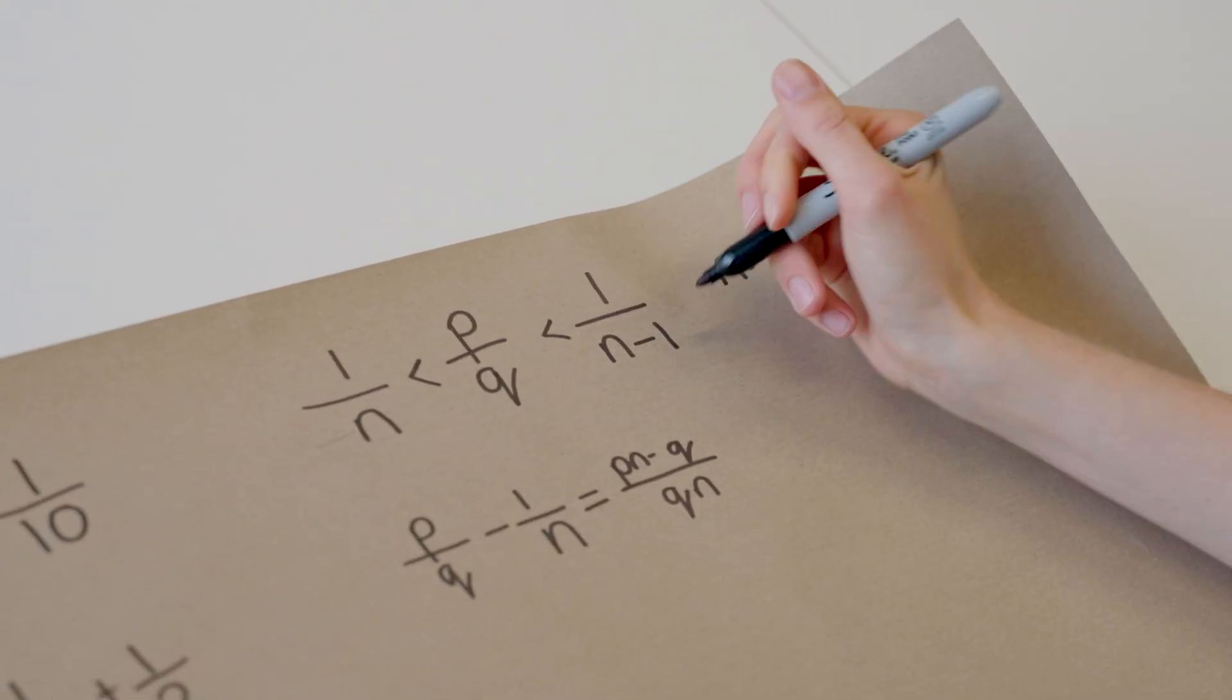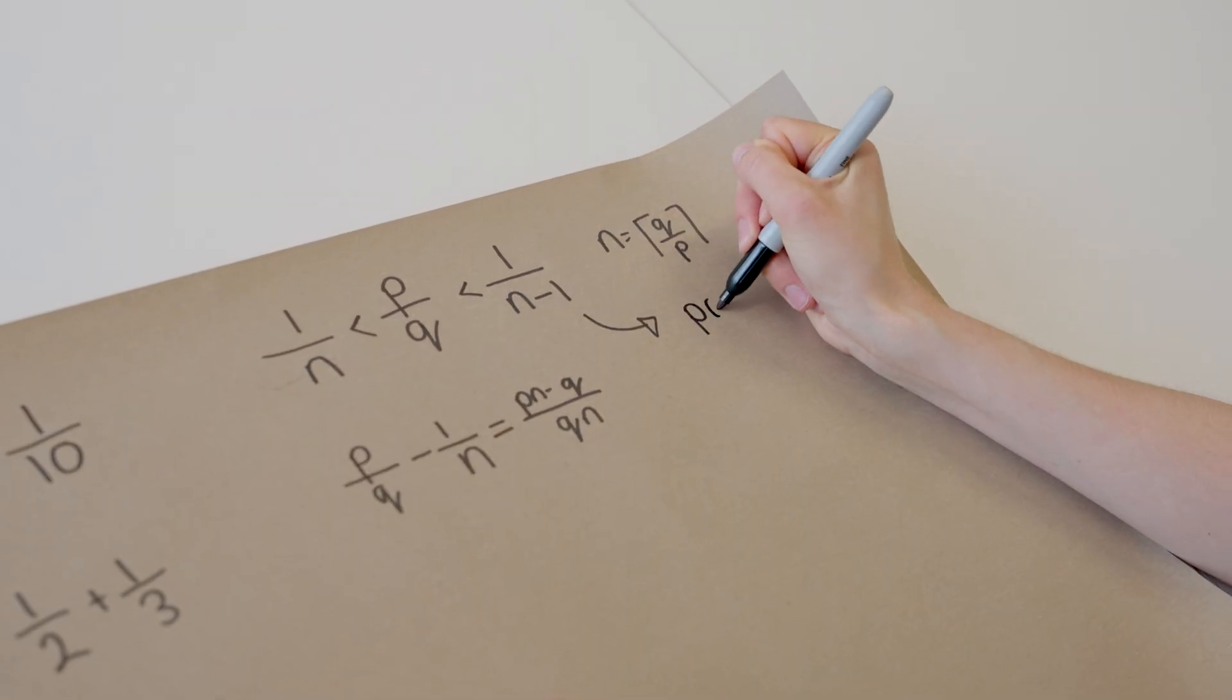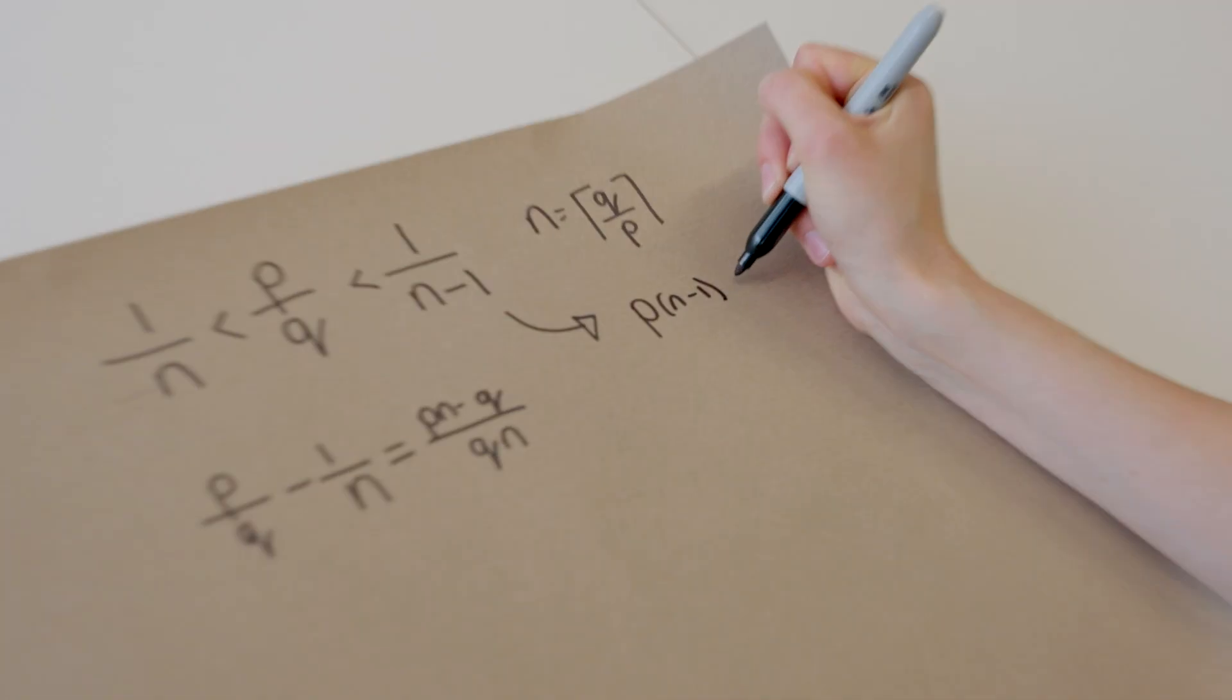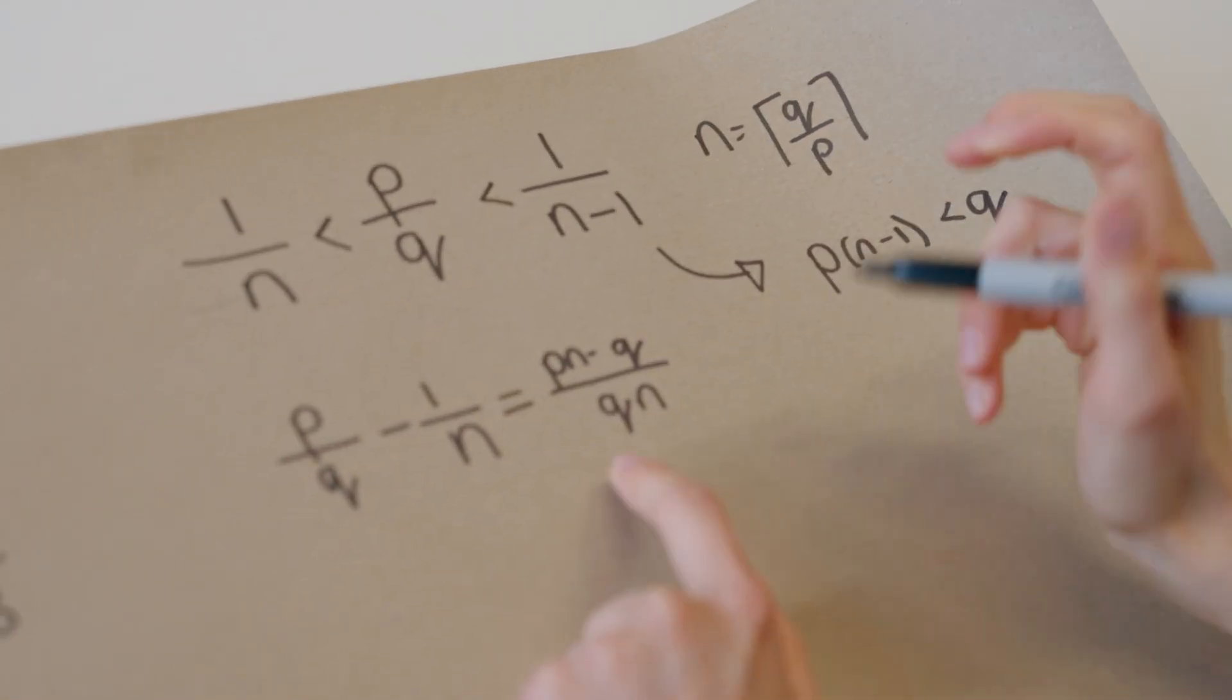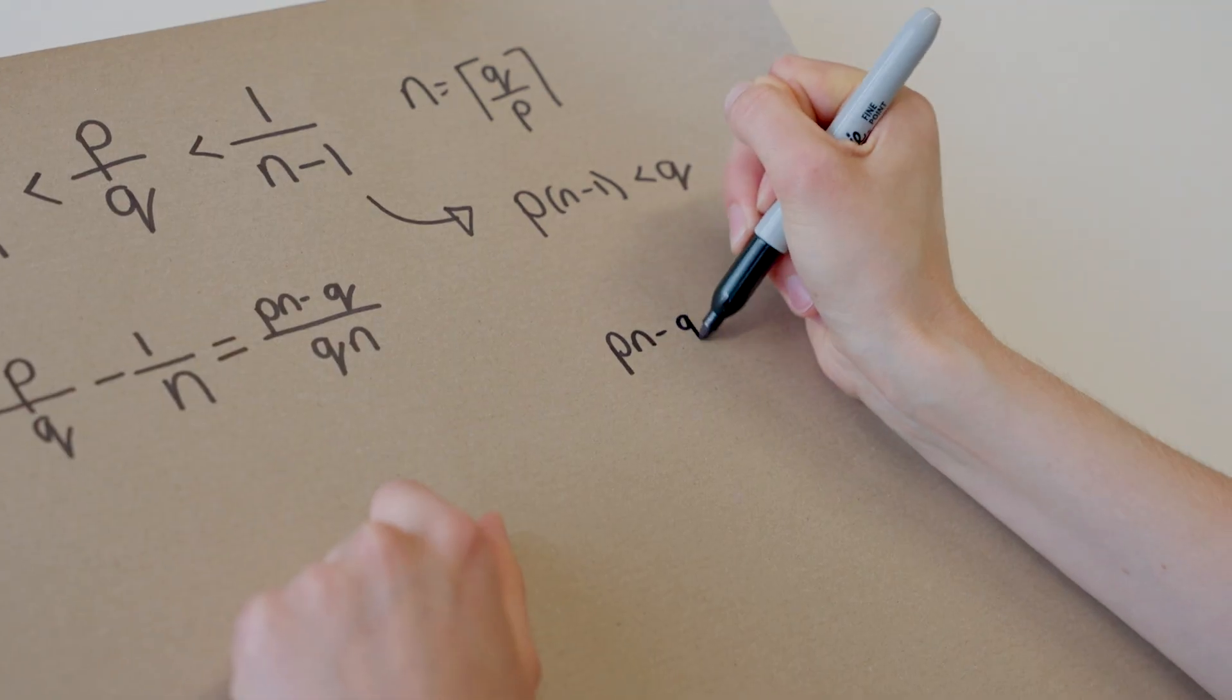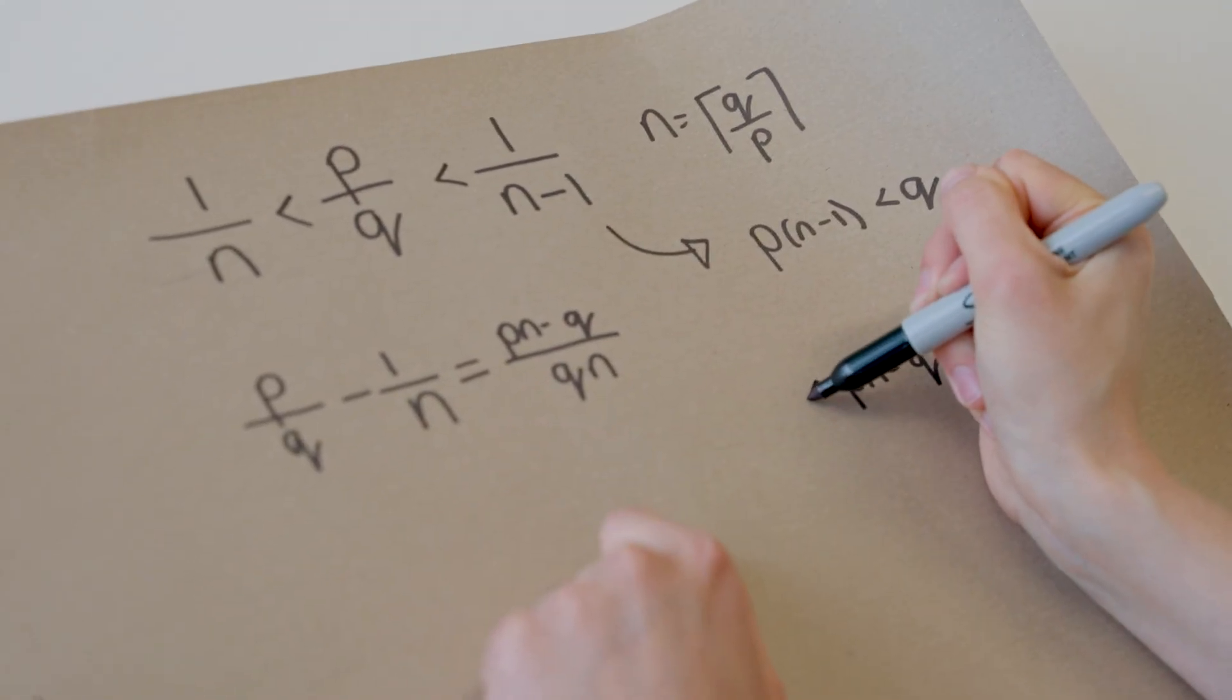Now from this, we can multiply this out. And then we get that, for example, p times n minus one is less than q. Now if we substitute this in, we get that p n minus q is strictly less than p. And we already know it's positive, remember.